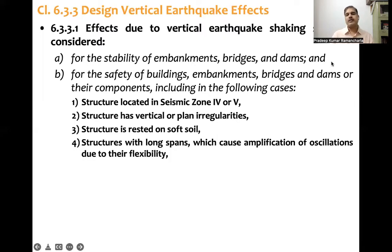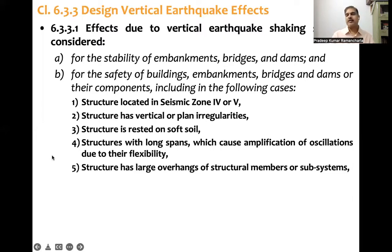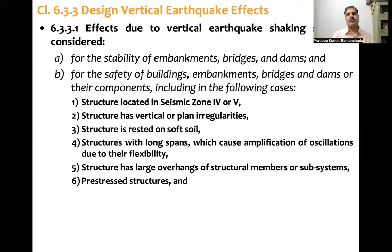Next, structures with long spans which cause amplification of oscillations due to their flexibility — when long spans are present, the vertical component causes large deformations and must be considered. Then, structures with large overhangs of structural members or subsystems — if components are projecting out from the building, vertical ground motion becomes critical. Also, pre-stressed structures, because they have lesser member dimensions and long spans, also need the vertical component to be considered.